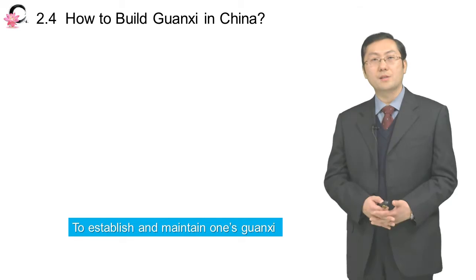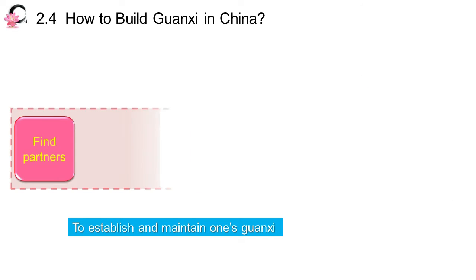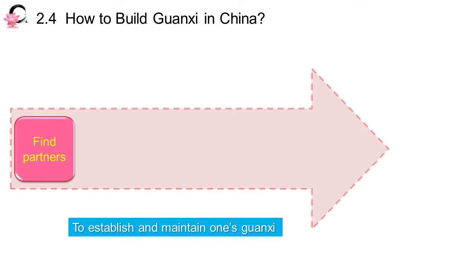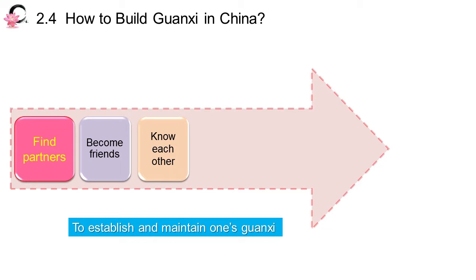The first thing is you need to find your partners in the same business field. You need to get along with them — first, become friends with them. Then you need a long time to know each other, and you need to meet this kind of person very often, probably not for business purpose, but for personal purpose.